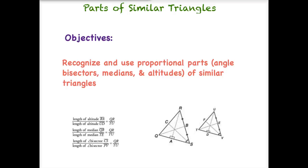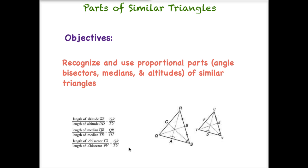Welcome to Parts of Similar Triangles. Our objectives are to recognize and use proportional parts like angle bisectors, medians, and altitudes of similar triangles. Down here is an example showing two similar triangles with altitudes, medians, and angle bisectors drawn in, and then some proportional relationships. We are going to be exploring each of these as well as doing some sample prompts.